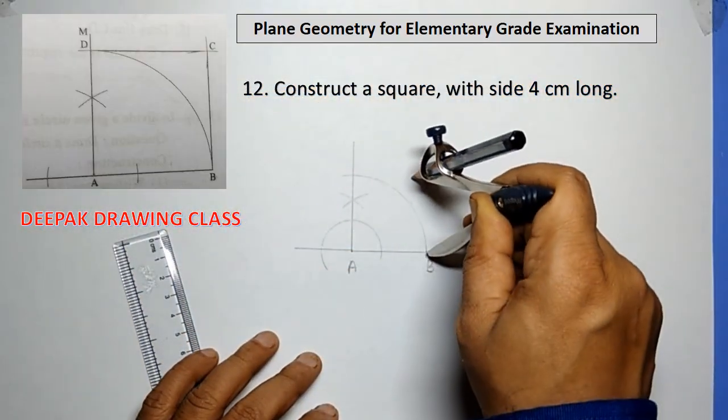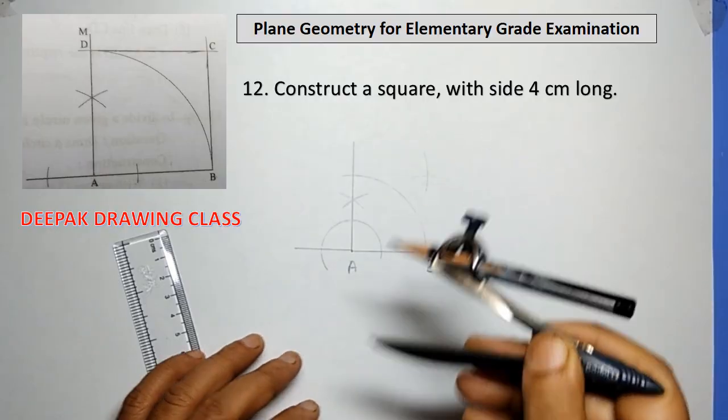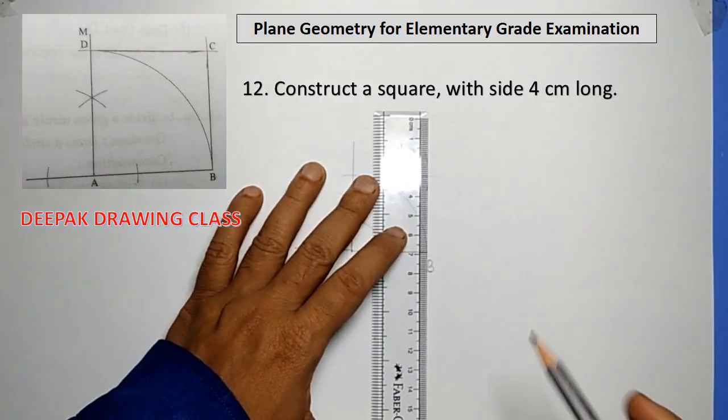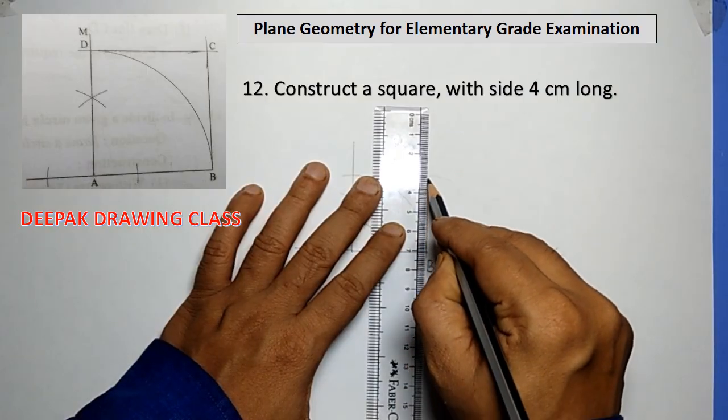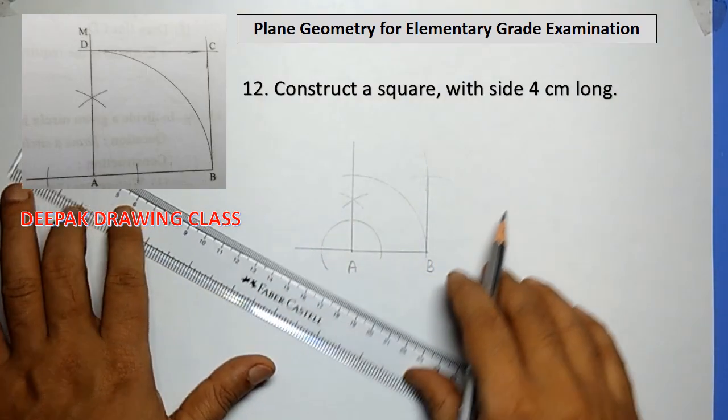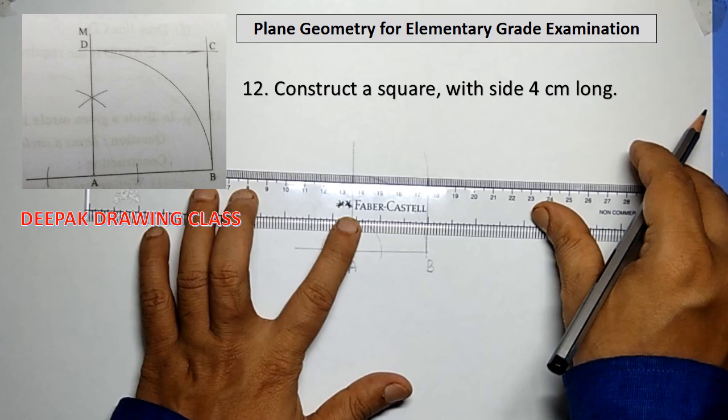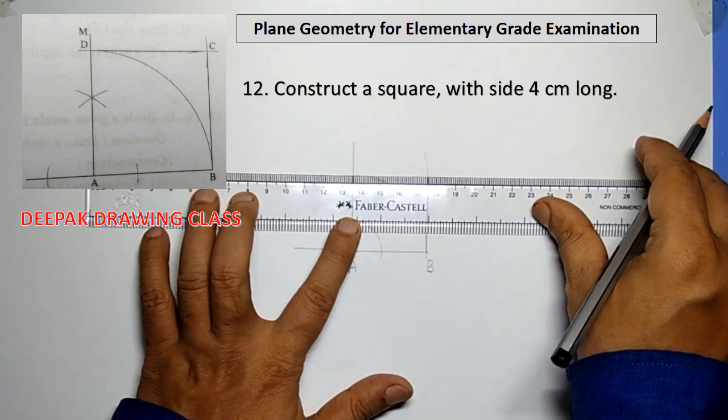With the same radius and with centers D and B, draw two arcs intersecting each other at the point C. Lastly, draw lines CB and CD respectively.